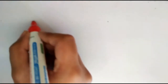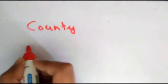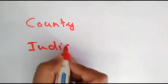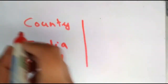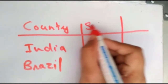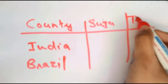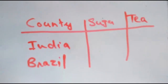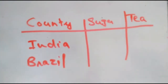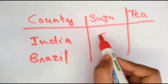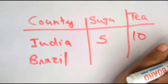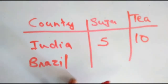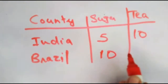In the example of absolute advantage theory, we are taking two countries: India and Brazil, and two products: sugar and tea. Assuming there is only one employee, that one employee can produce 5 kilos of sugar in India and 10 kilos of tea in India. One employee in Brazil can produce 10 kilos of sugar and 5 kilos of tea.